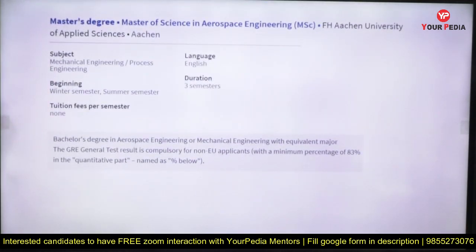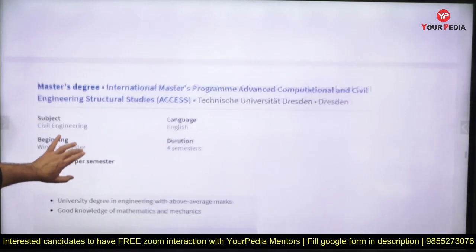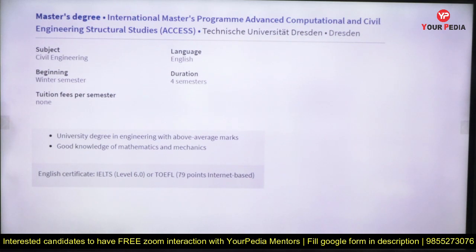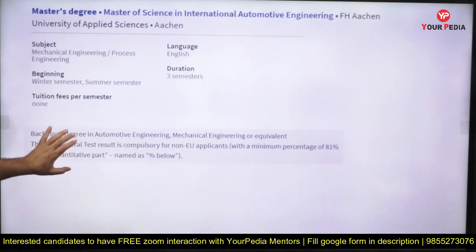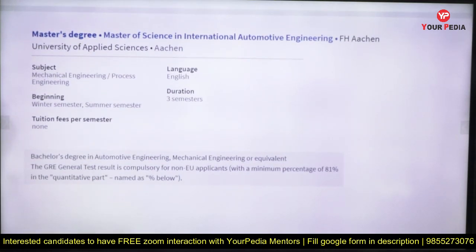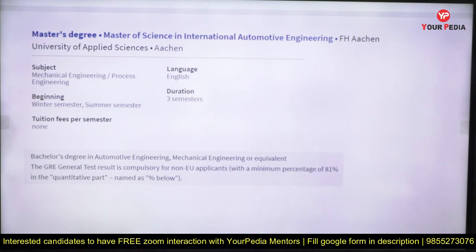Master of Science in Aerospace Engineering — three semesters, no tuition fee. Advanced Computational and Civil Engineering Structural Design is available for civil engineers. The IELTS requirement is Band 6 with 79 points — very straightforward. International Automobile Engineering is ideal for mechanical engineers — three semesters, no tuition fee. Germany is famous for automobiles, so nothing can be a better option than this.